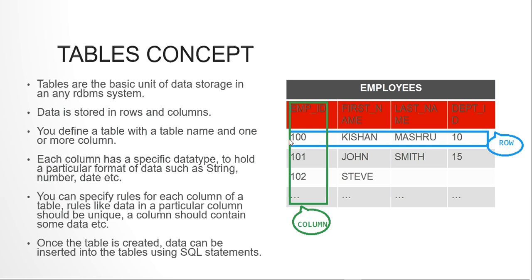You can also have more specific rules on a table. For example, employee ID can never be null — null in Oracle means the non-existence of data — so you can make it mandatory with NOT NULL. You can also reference department ID from another table. These sets of rules are called constraints.